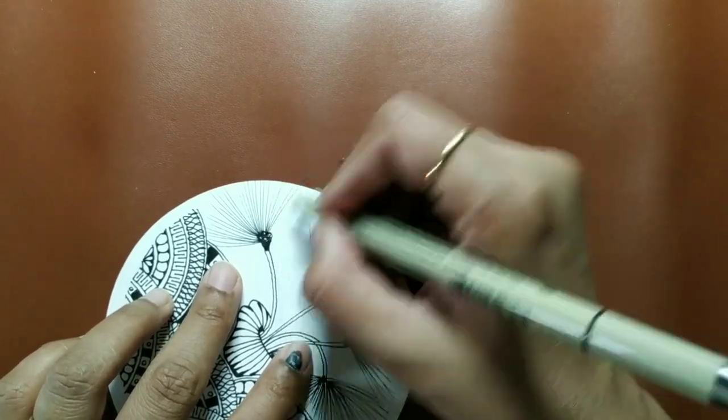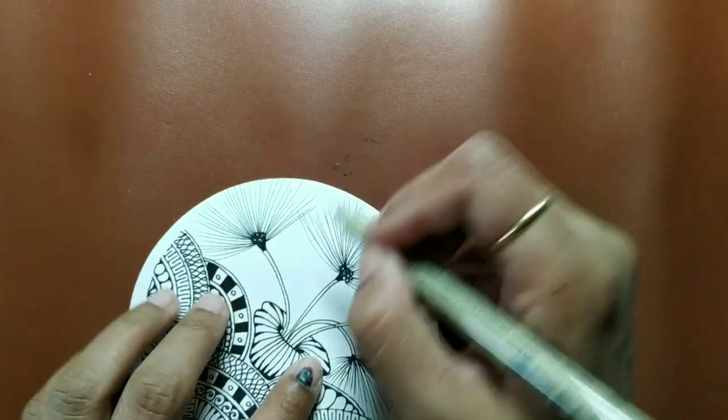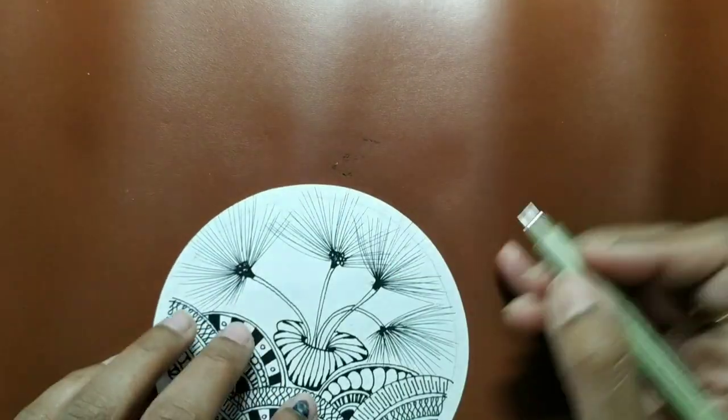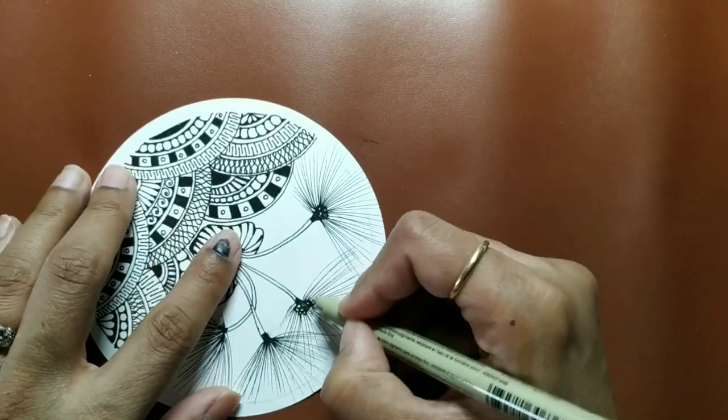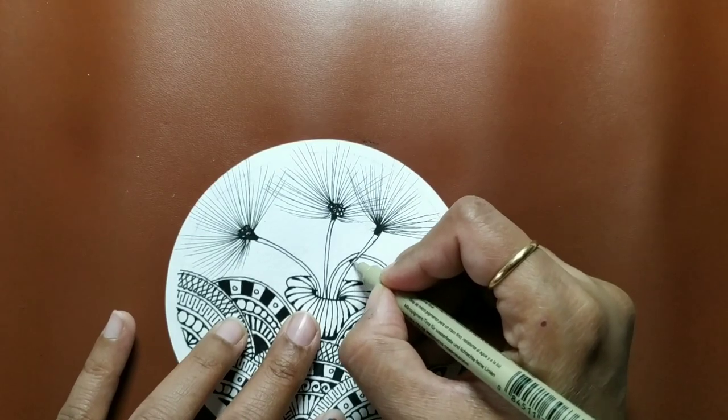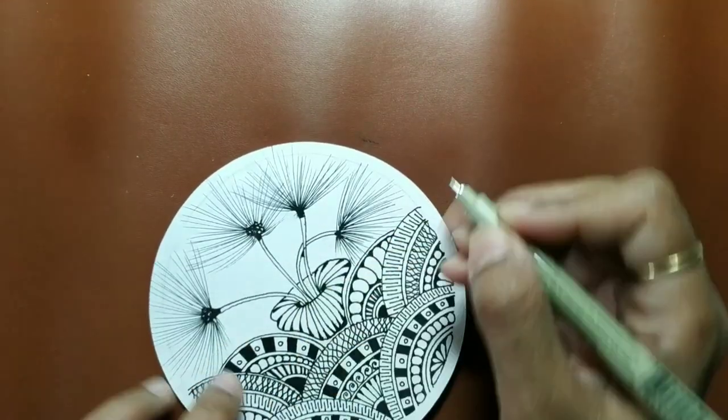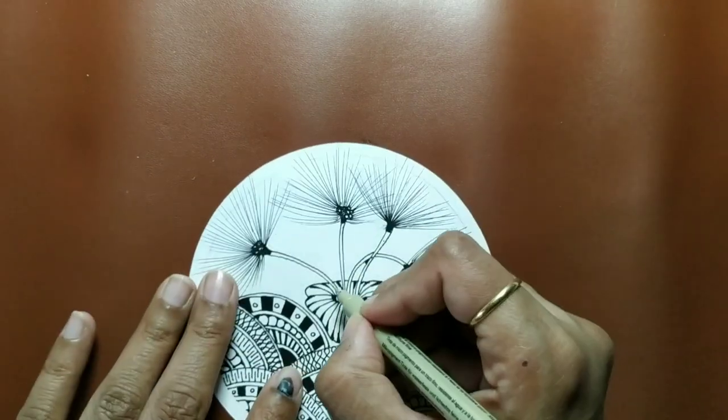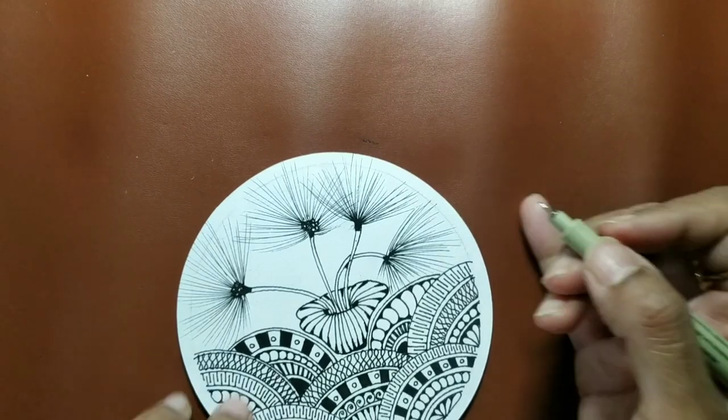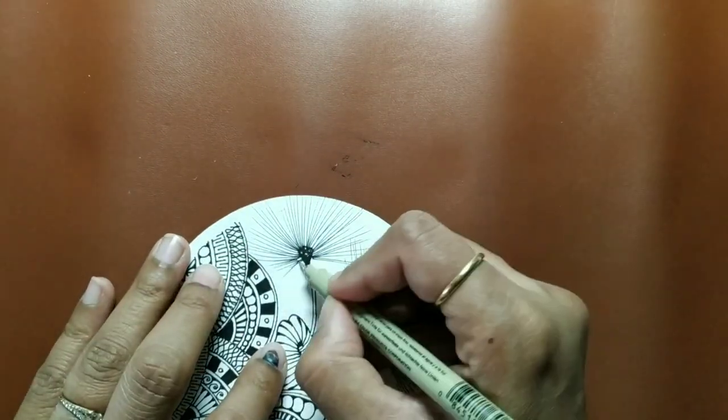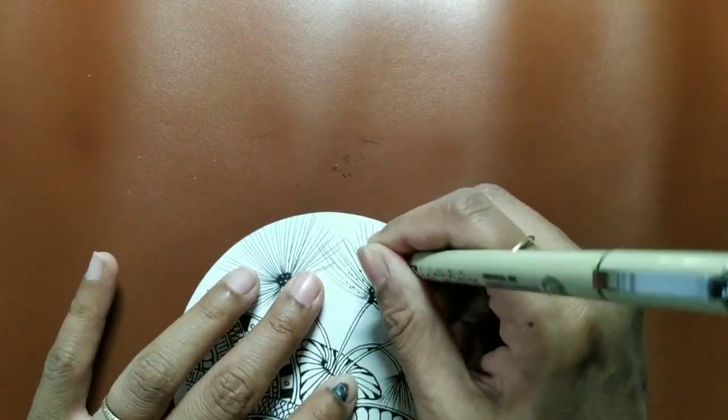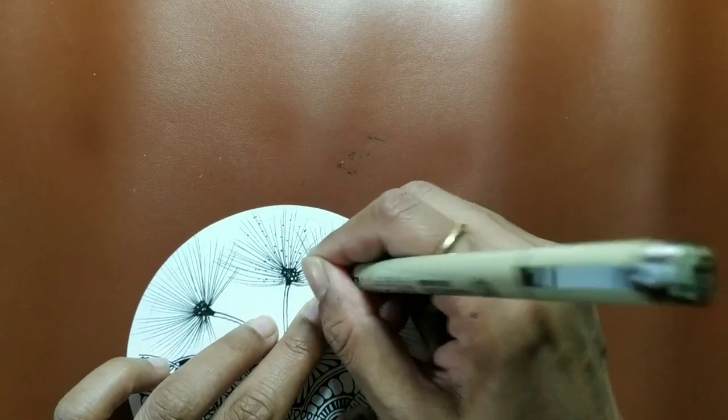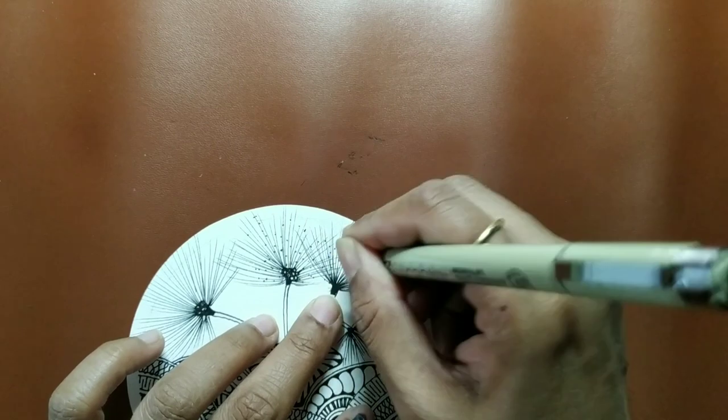Just let your pen loose. I'm just going to add some bit of, just connect these lines. And now the last thing to do is to add those dots, without which the tangle is not complete. So just holding the pen perpendicular and adding those dots. Looks so fragile and delicate.